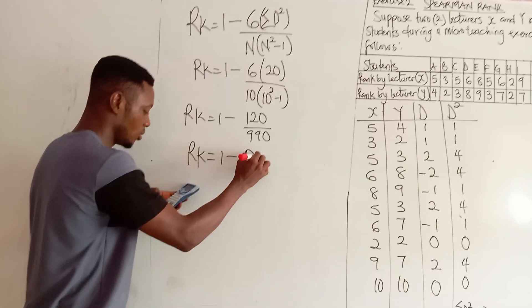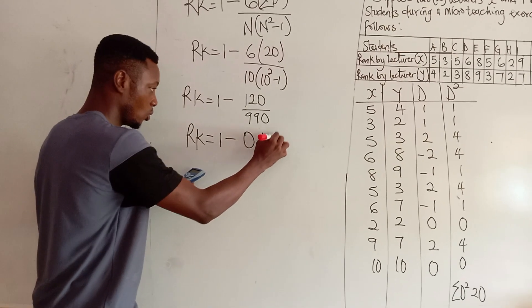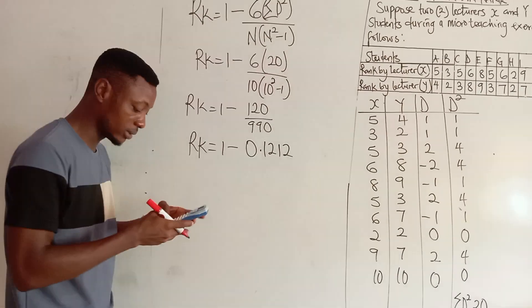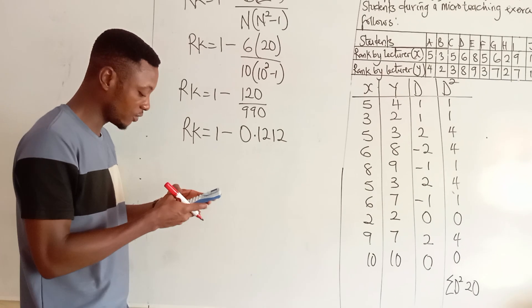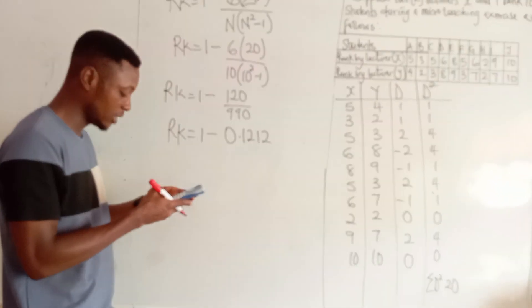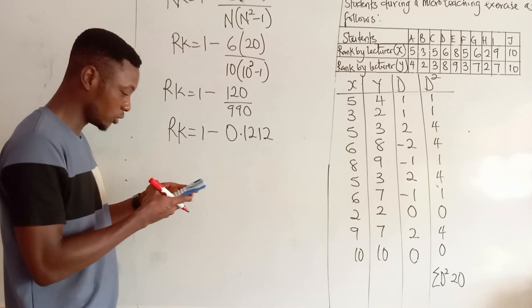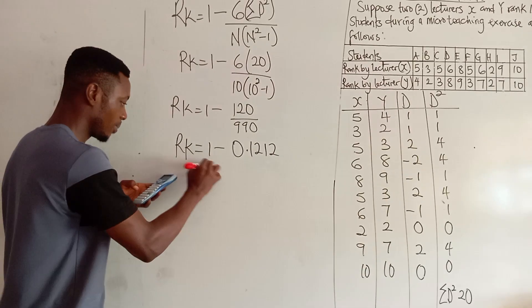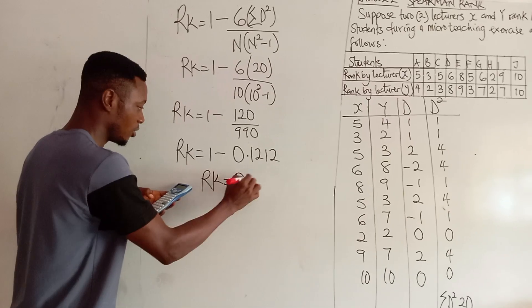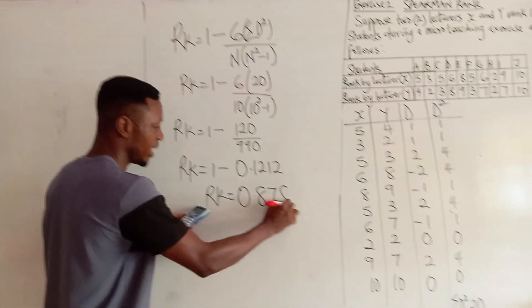That will give me 0.1212. It's recurring decimal. So, I have 1 minus 0.1212. That will give me rank is 0.8788.